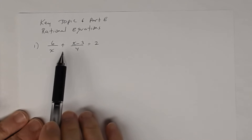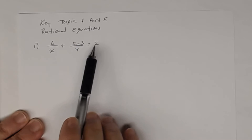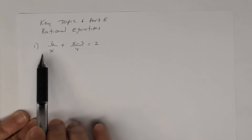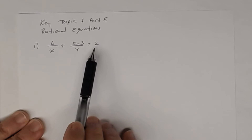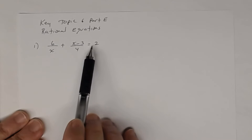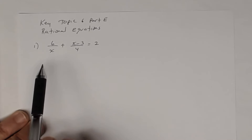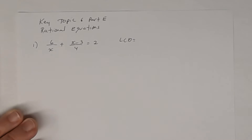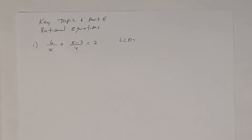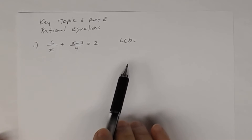For number one, a rational equation is an equation in which one of the terms is a rational expression. All of these can be considered rational expressions — you have a polynomial over a polynomial. Two is considered a polynomial as well; it's a monomial, so 2 divided by 1. When solving a rational equation, you have to find the least common denominator, and the LCD needs to be written as a product of factors.